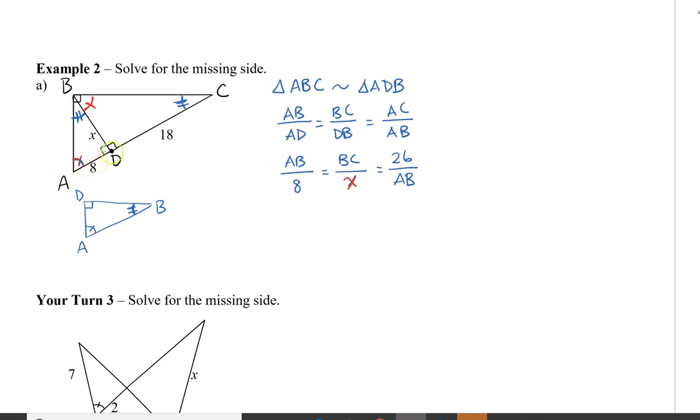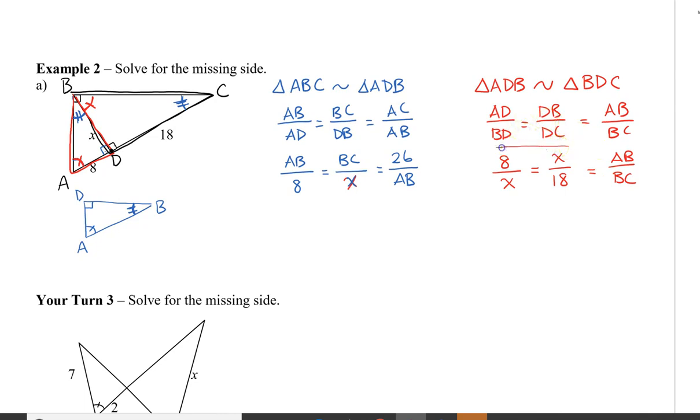This time I'm going to say that triangle ADB, which is this triangle over here, is similar to triangle BDC, which is the triangle on this side over here. Alright, so now knowing that, let's write our proportions again. So AD divided by BD equals DB divided by DC equals AB divided by BC. So let's fill in the numbers or variables that we know again. So AD here is 8 divided by BD, which is X, equals DB, which is X again, divided by DC, which is 18, equals AB, which we don't know, and BC, we also don't know.